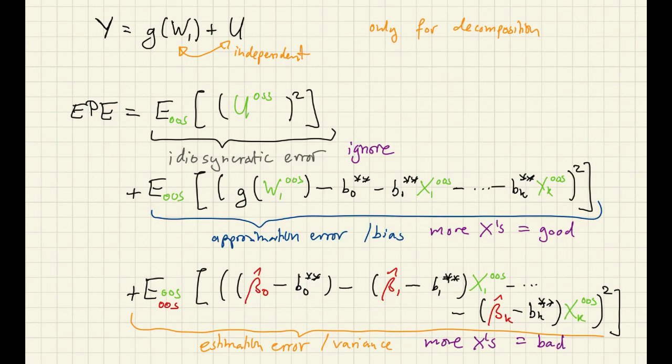So obviously it's impossible to choose a large number of axes and simultaneously choose a small number of axes. To get a low EPE, you want to choose a number of axes that is not too small and not too large. So that is large enough to give you a reasonably small bias component and that is small enough so that your variance component doesn't explode. This is called the bias-variance trade-off of prediction.